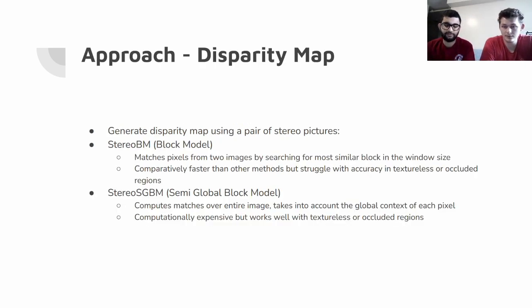The first part of our approach was creating a disparity map. The stereo cameras are two different cameras set up a distance apart. It takes the details from both pictures and creates a single image with all the information it can gather. We tried two different methods: stereo BM, which is block matching, and stereo SGBM, which is semi-global block matching.